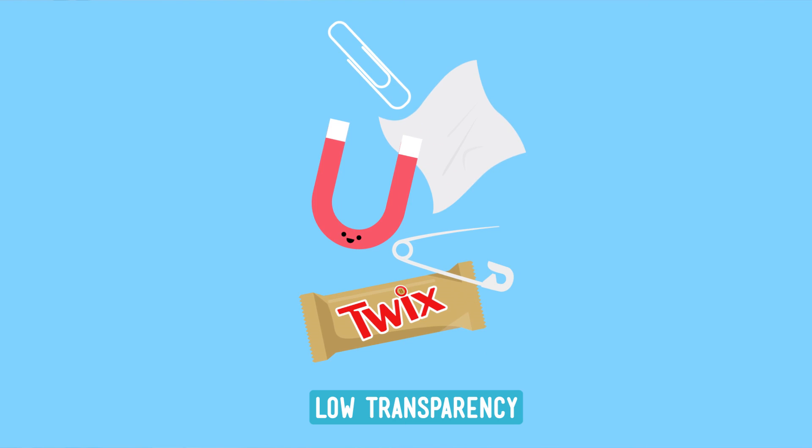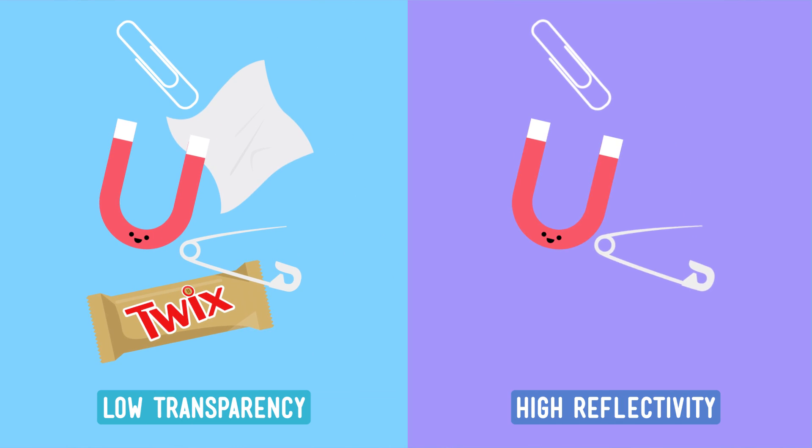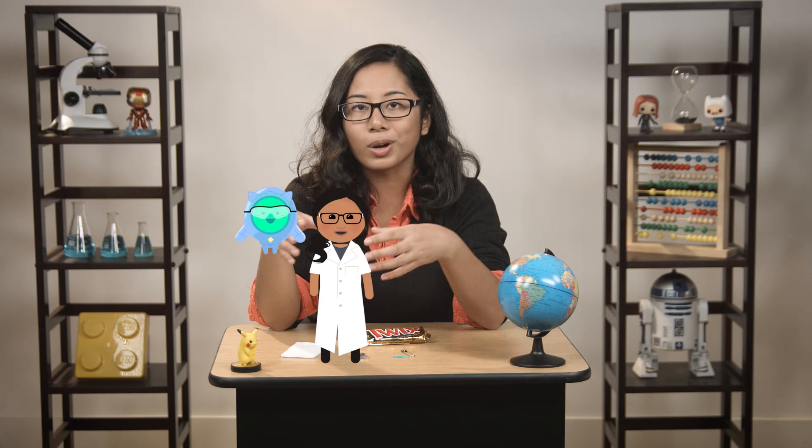So at the end of our little experiment, we have three groups: things that have low transparency, things that have high reflectivity, and things that are magnetic. And that's just using a few of the many properties that are out there. Scientists use many more to organize substances into groups. By looking at these groups, scientists have a pretty good idea about how objects made out of those substances are going to act.